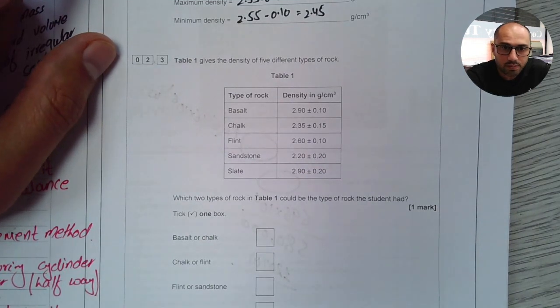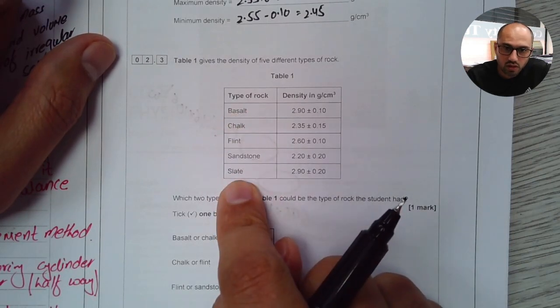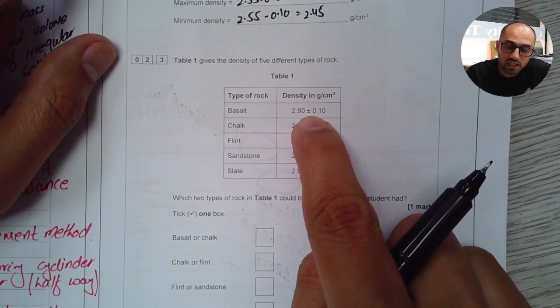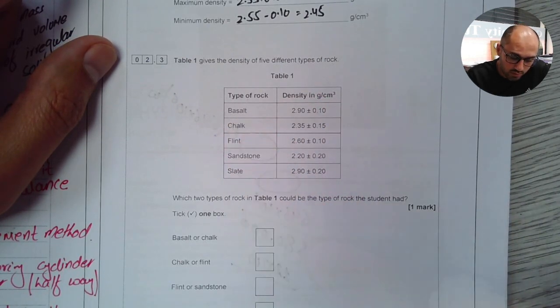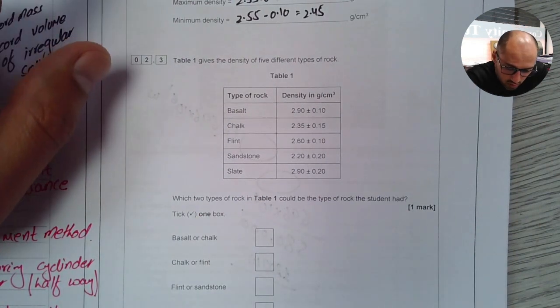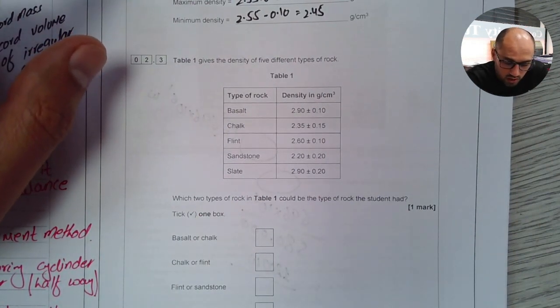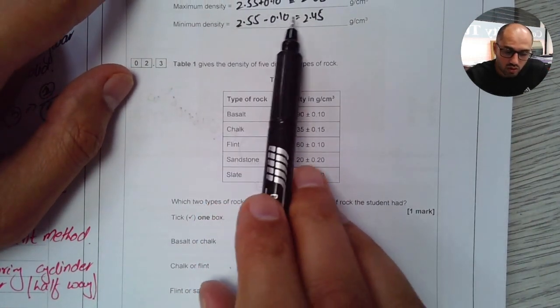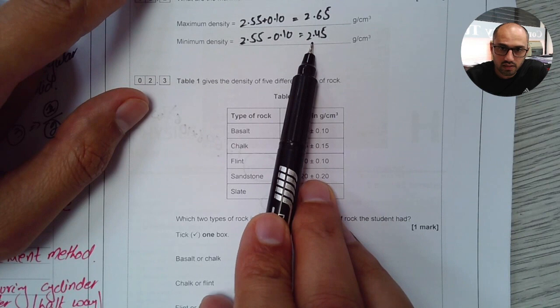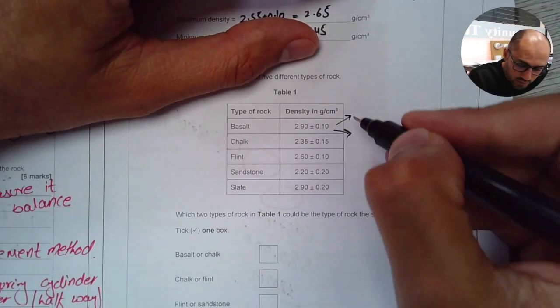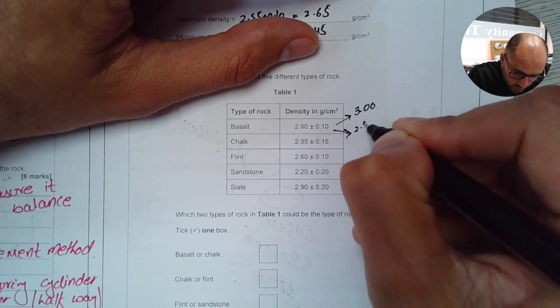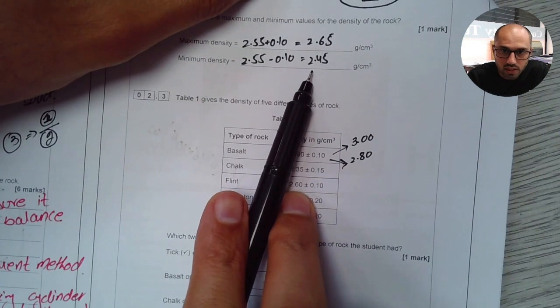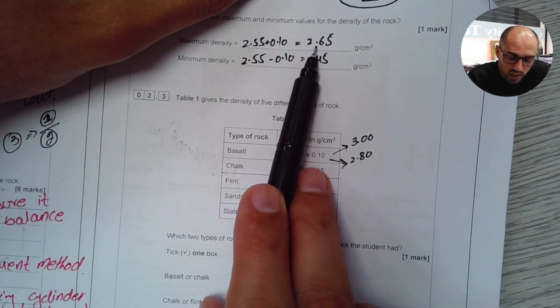Next part says table one gives the density of five different types of rock. So they've given us five different types of rock and they've given us the densities. Remember they've given us maximum and minimum possible densities, which can be worked out using these values for each type of the rock. It says which two types of rock in table one could be the type of rock the student had. Now our rock has to have this density. It can't have anything other than that. In case of the first option, the biggest possible value will be 3.00 and the smallest will be 2.80. So if I look at it, my rock has to be between 2.45 and 2.65.